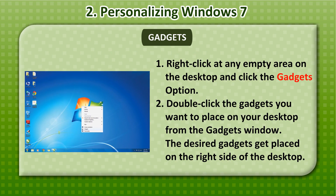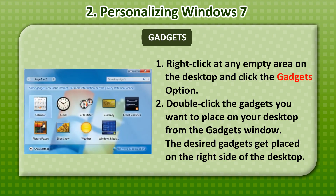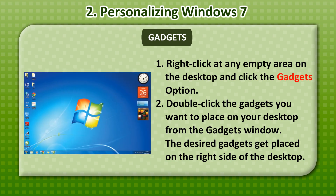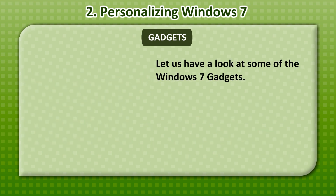To add gadgets on your desktop, follow the given steps. 1. Right-click at any empty area on the desktop and click the Gadgets option. 2. Double-click the gadgets you want to place on your desktop from the Gadgets window. The desired gadgets get placed on the right side of the desktop.